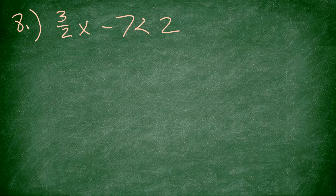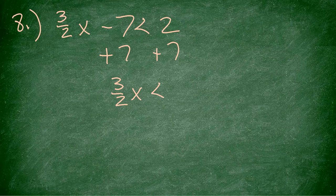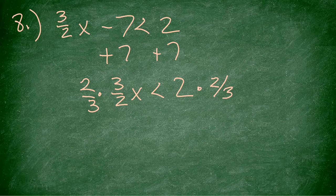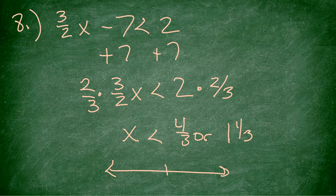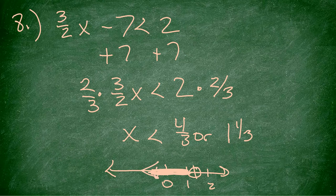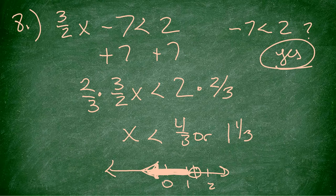Number 8: three-halves x minus 7 is less than 2. I add 7 to both sides to get three-halves x is less than 9. I multiply by the reciprocal two-thirds — which is positive, so no flip — and get x is less than 4/3, or 1 and a third. Number line: 0, 1, 2 — so 1 and a third is right there. Open circle, shade to the left. I check 0: 0 minus 7 is negative 7, which is less than 2. True.